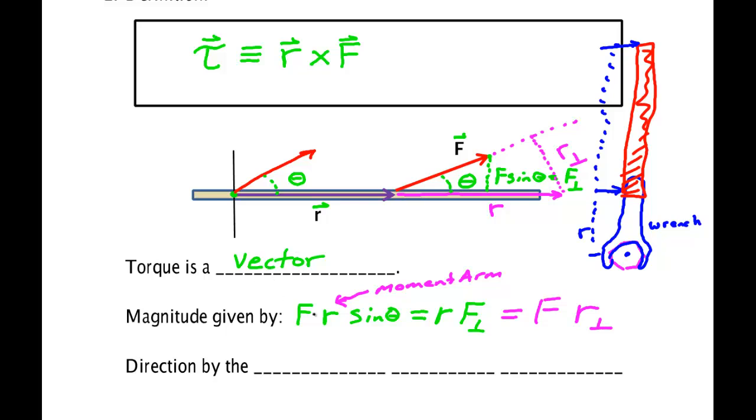So a couple important things: it is a vector, it has a magnitude, it depends on a force, a distance, and most importantly how much of those two are perpendicular to each other.